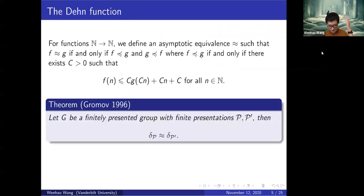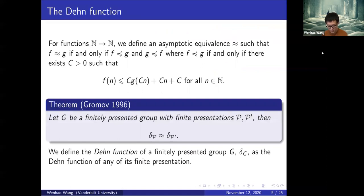Gromov proved that if G is a finitely presented group with two different finite presentations, their Dehn functions are equivalent under this relation. Therefore we can define the Dehn function of the group independently of the presentation. Moreover, the Dehn function is a quasi-isometric invariant — it is preserved under quasi-isometry.